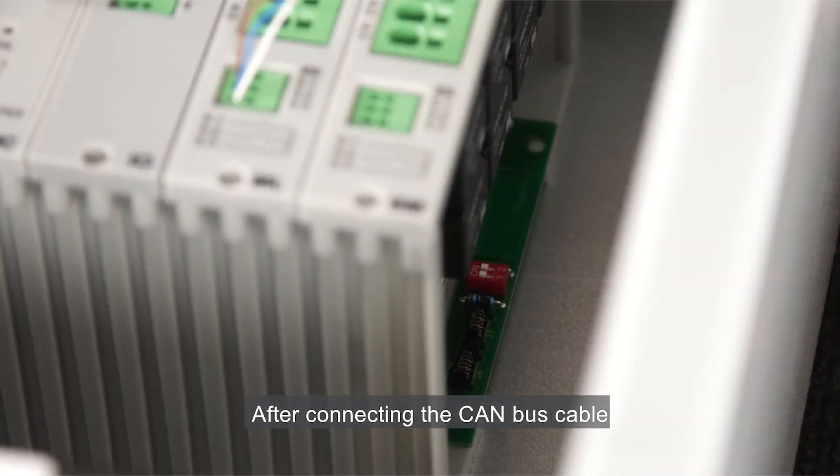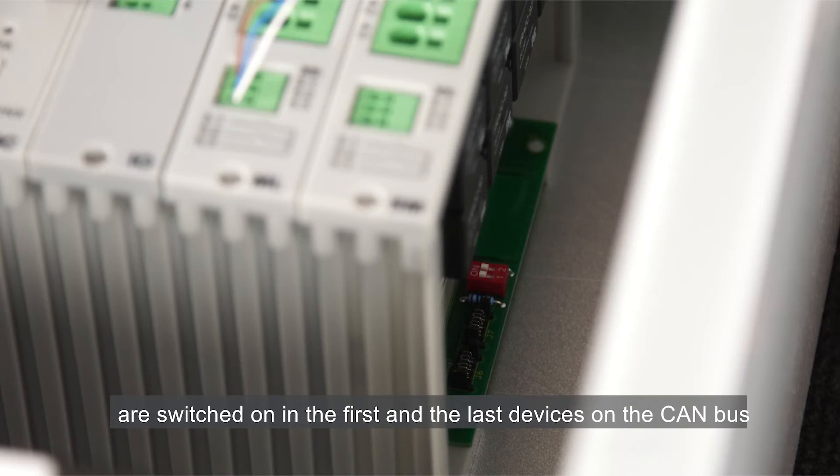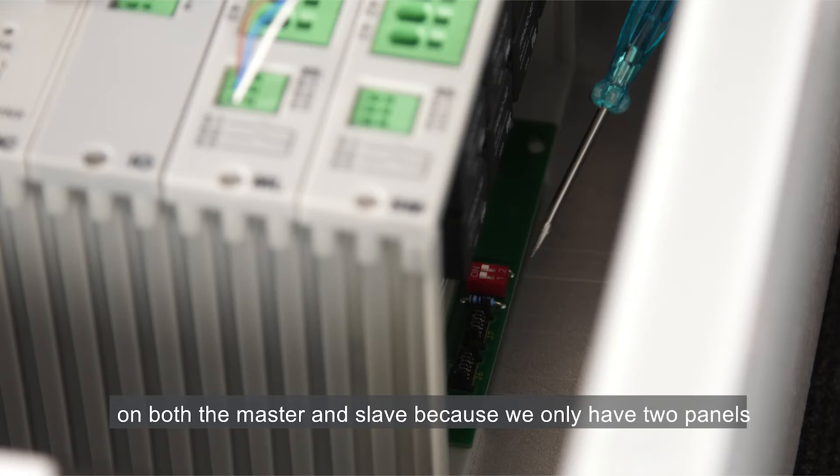After connecting the CAN bus cable, we need to make sure that micro-switches for the end cable module are switched on in the first and the last devices on the CAN bus. The switches are located here on the back plate. I've turned them on, on both the master and slave, because we only have two panels.